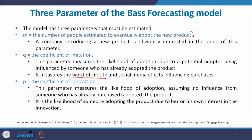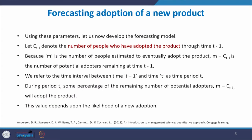The third parameter is the coefficient of innovation, P. This parameter measures the likelihood of adoption due to innovation, assuming no influence from someone who has already purchased the product. It is the likelihood of someone adopting the product due to their own interest in the innovation. These are the three parameters in the Bass forecasting model. Using these parameters, let us now develop the forecasting model.